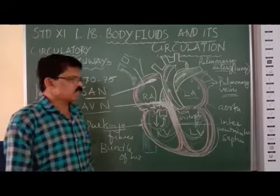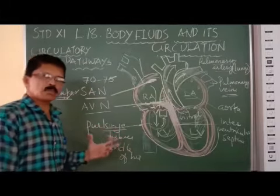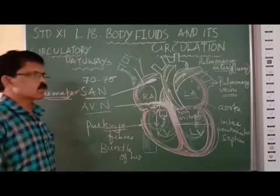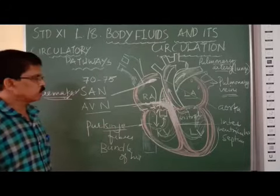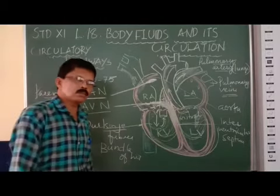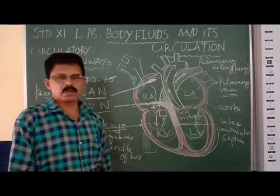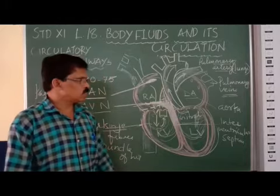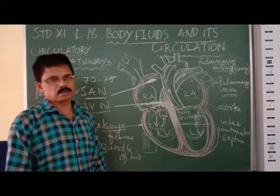The action potential developed in the SA Node is 70 to 75 times per minute, and this action potential is equivalent to the number of heart beats — that is 70 to 75. So the heart is connected through the bundle network. Okay, so you got this part. Very great. Thank you.